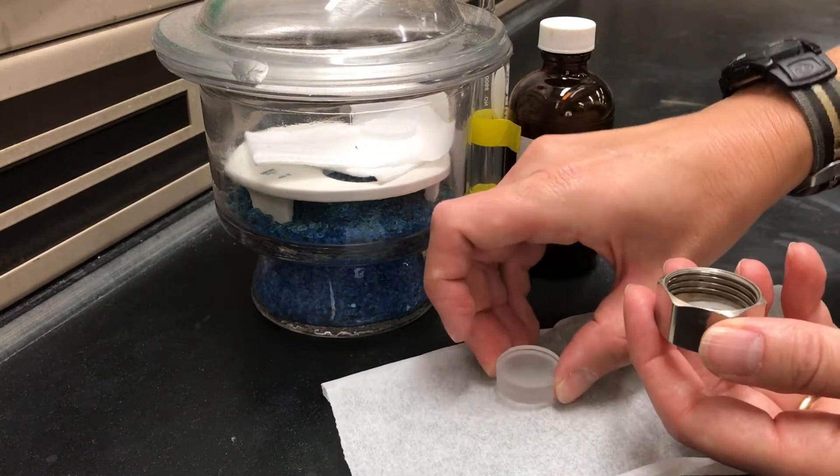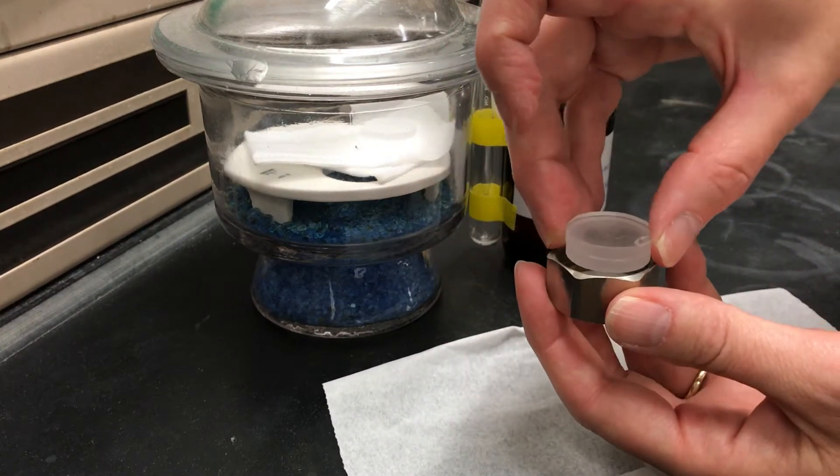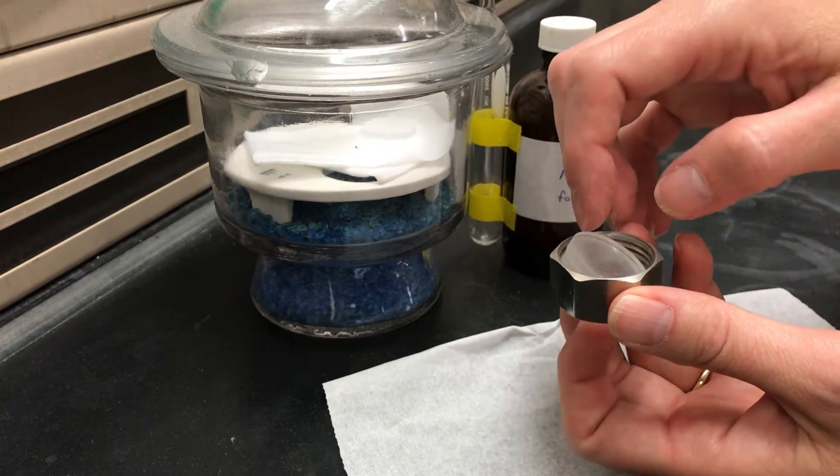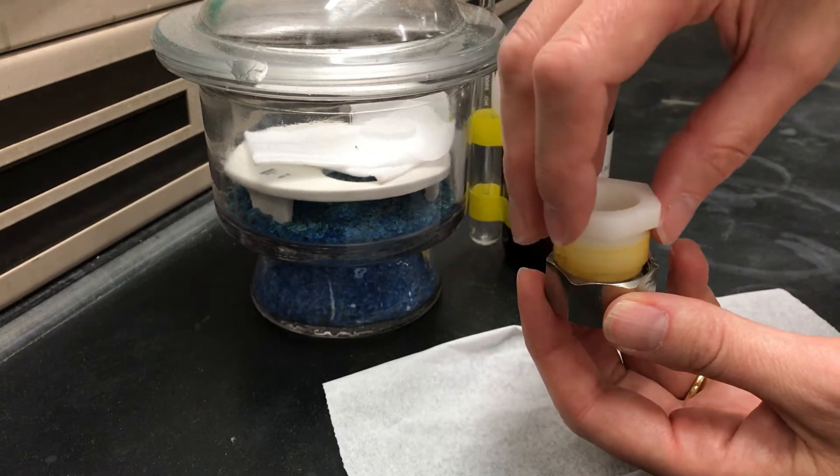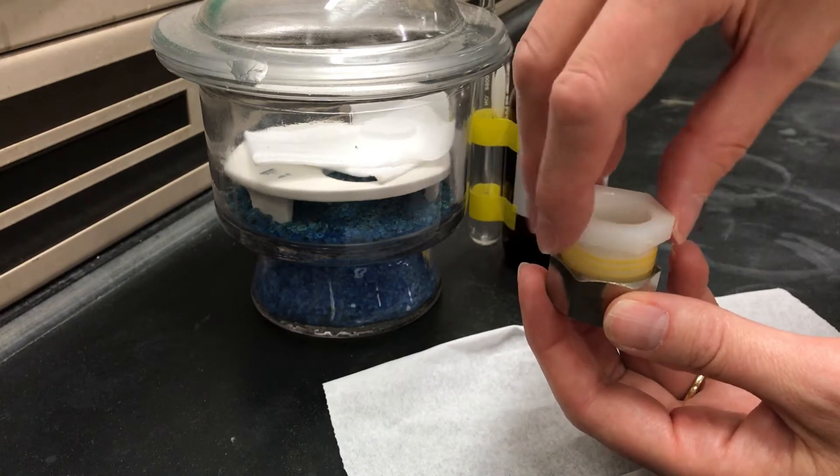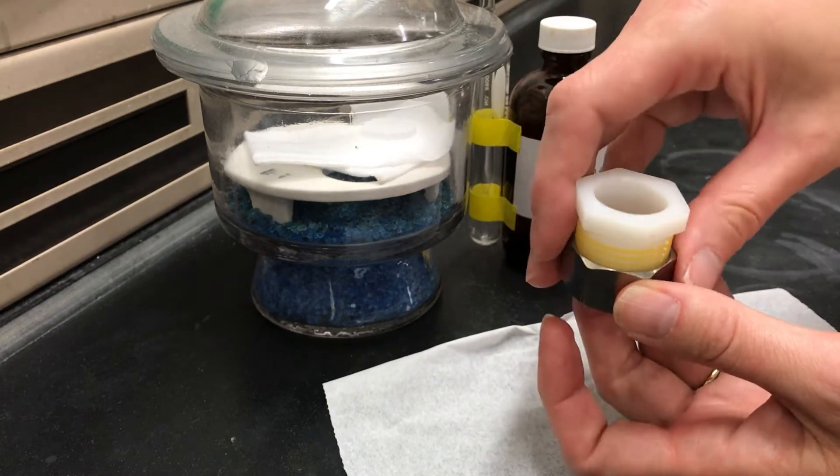You take that salt sandwich and you put it into the bottom part of a holder. Then the top part screws on and you want to screw it on so it's just barely tight. You don't want to tighten it too much or you might crack the plates.